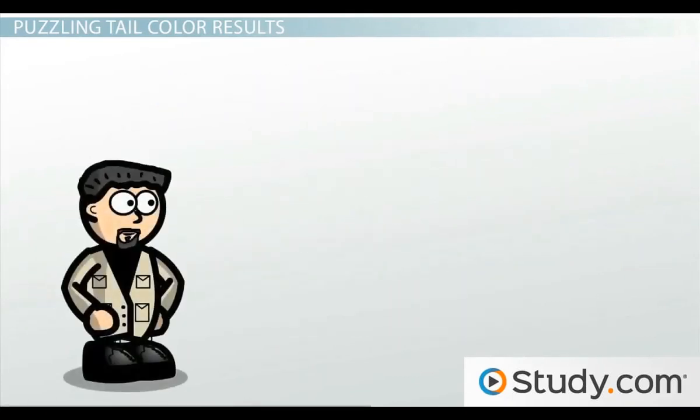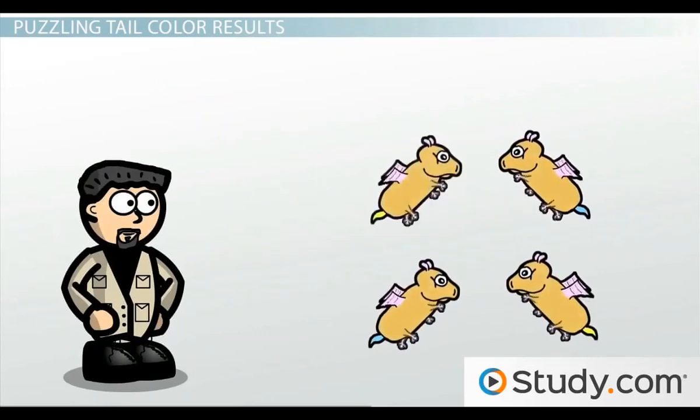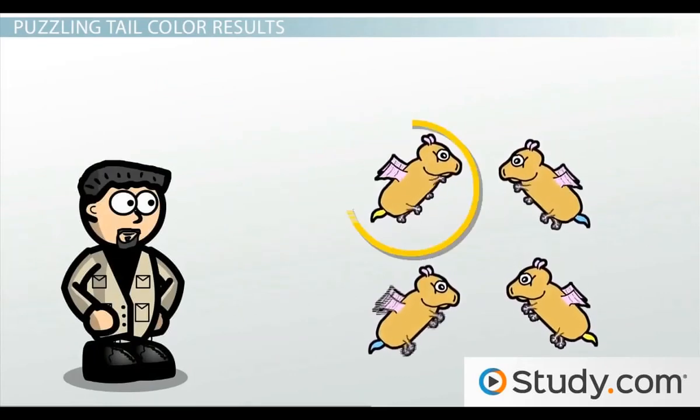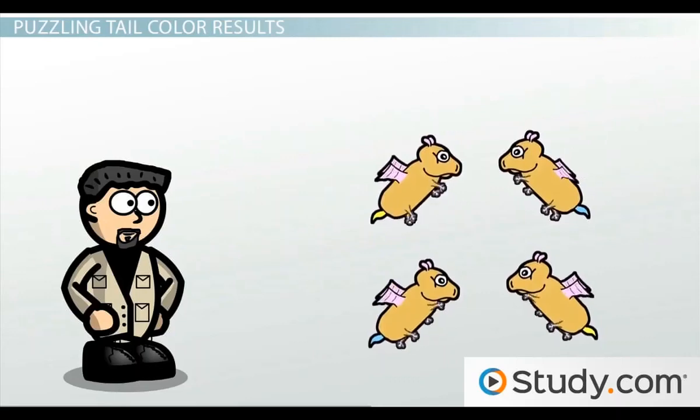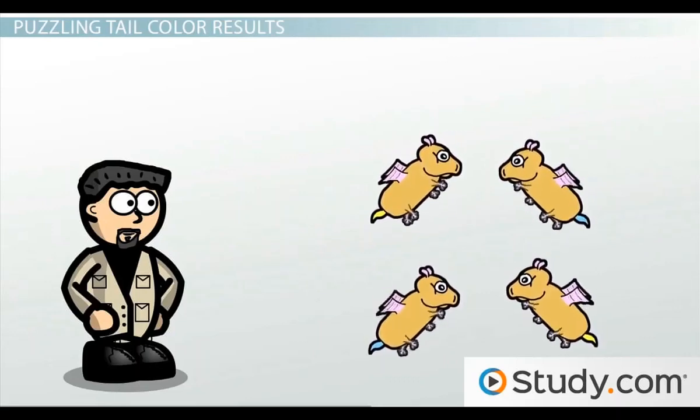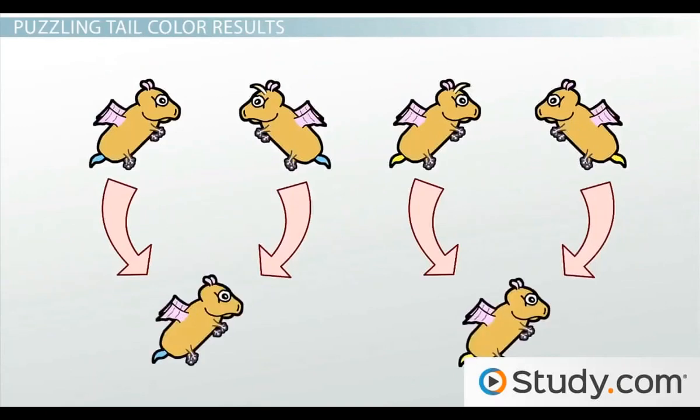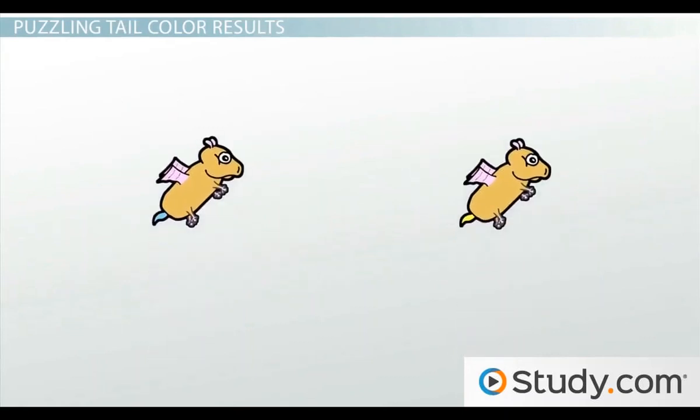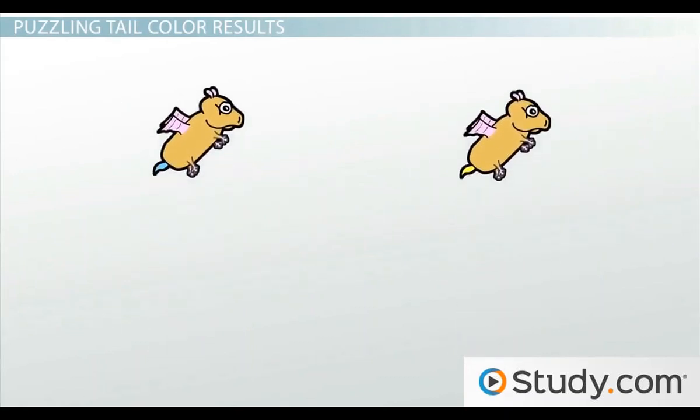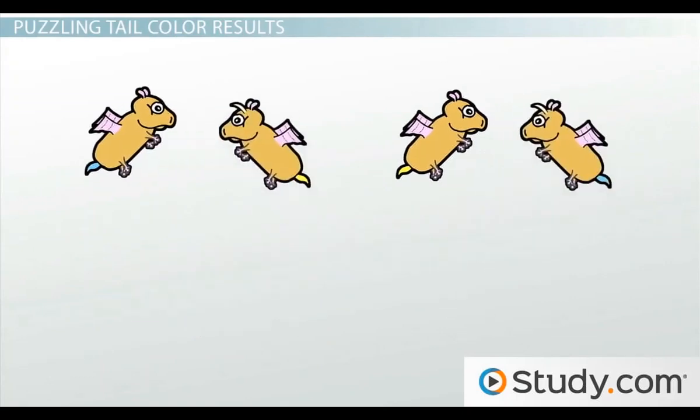So during his latest trip to collect new and exciting strains of flying hamsters, he notices flying hamsters with different tail colors and decides that's the next genetic trait he's going to study. Like he's always done, he establishes some true breeding strains and begins his experimental crosses. He starts with strains of brown hamsters with blue tails and another strain of brown hamsters with yellow tails and mates those guys together.